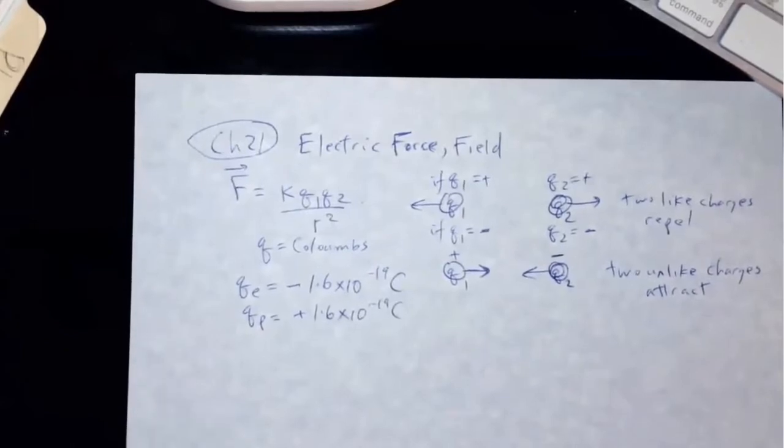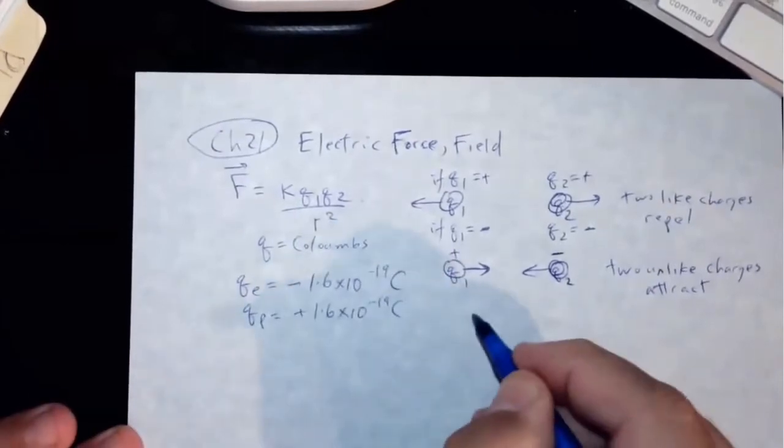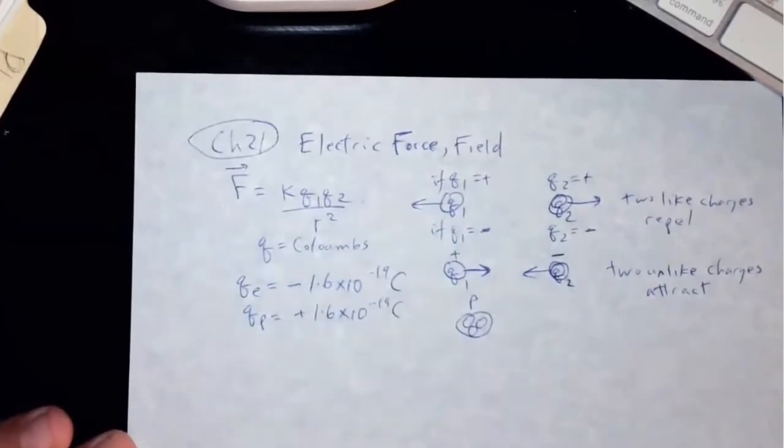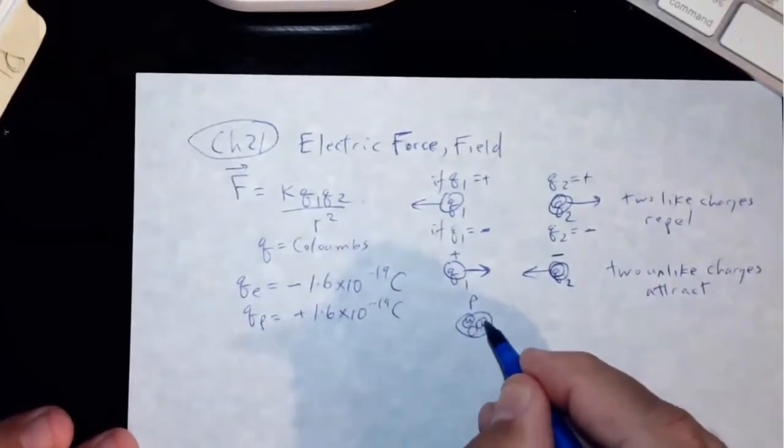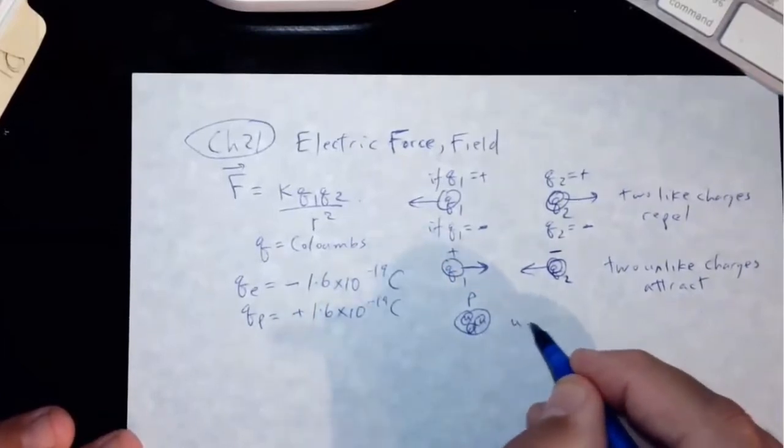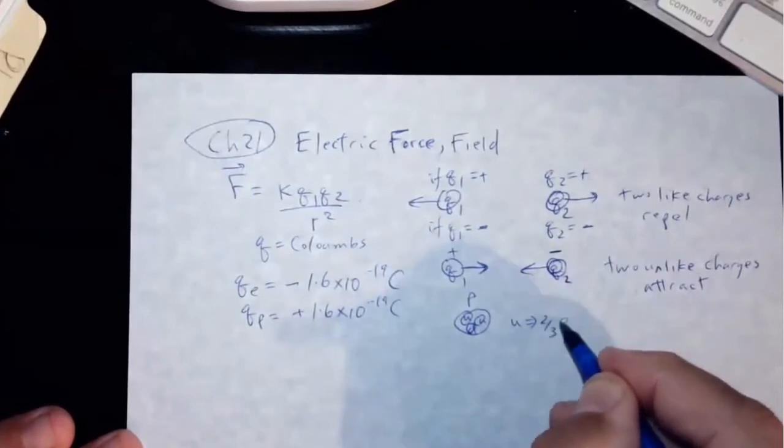I believe there's, we think that according to theory that a proton is made up of three quarks: up quark, up quark, and down quark.